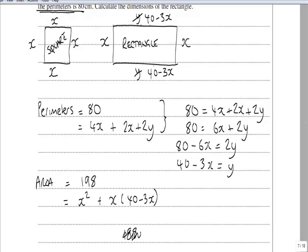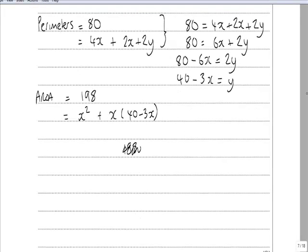So if I now equate these I should generate a quadratic, so 198 is equal to x squared expand the bracket 40x minus 3x squared. And rearranging I've got minus 2x squared on the right hand side so I'm going to add 2x squared to both sides as I go along.